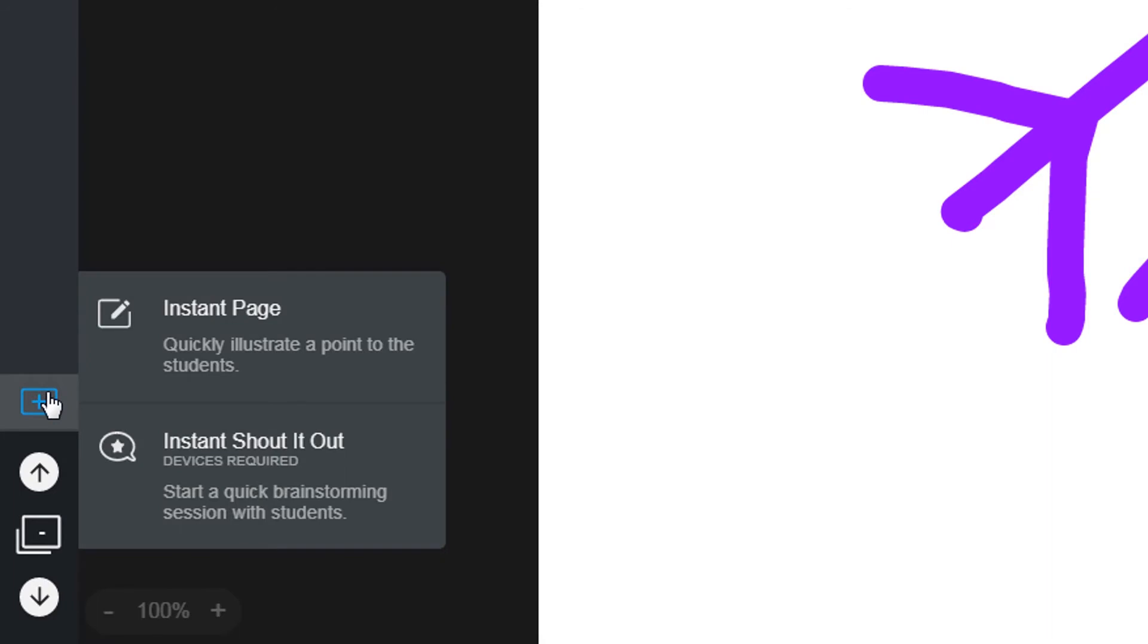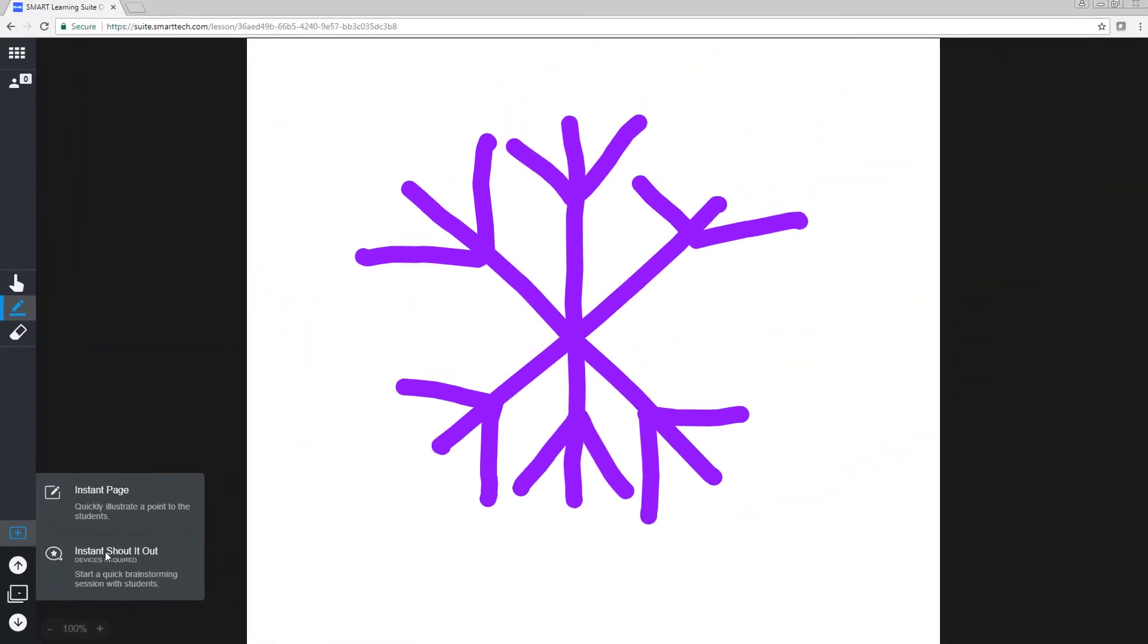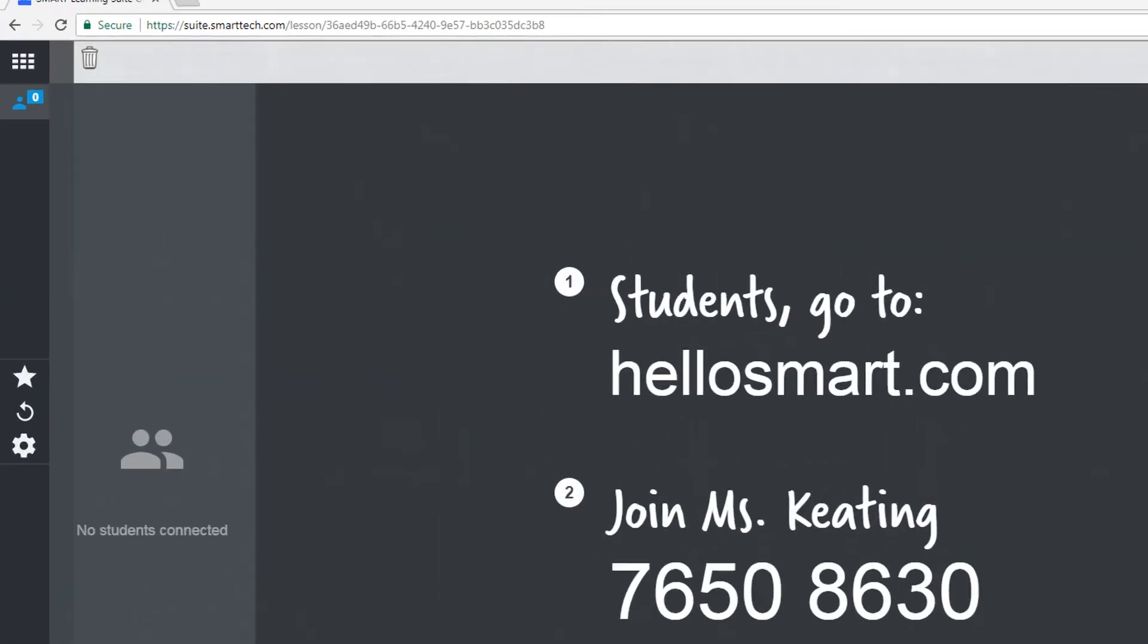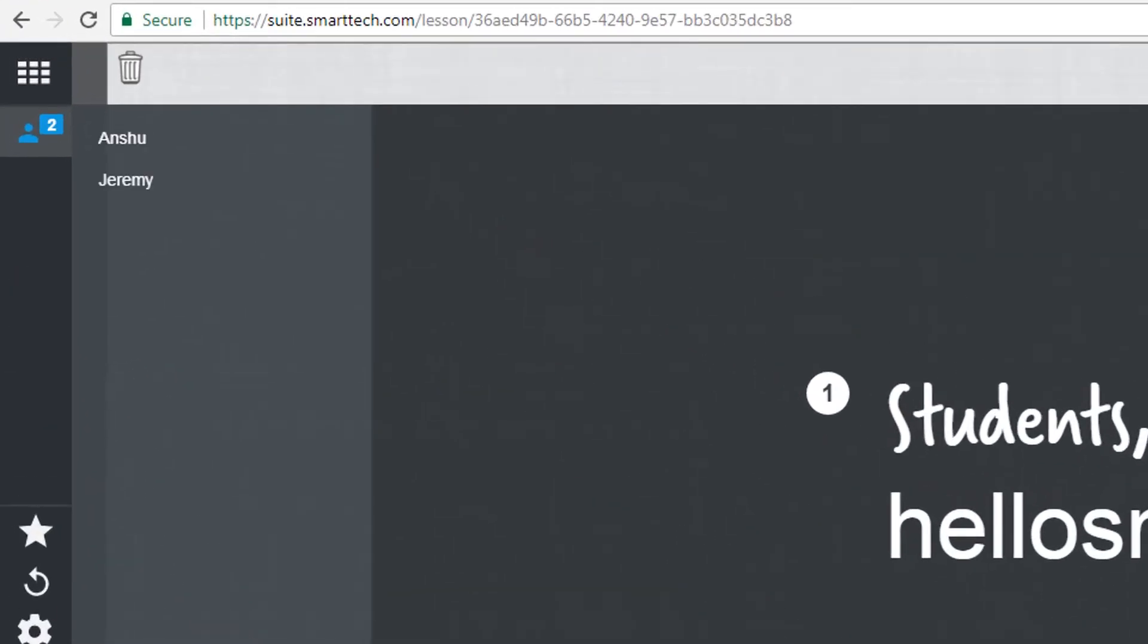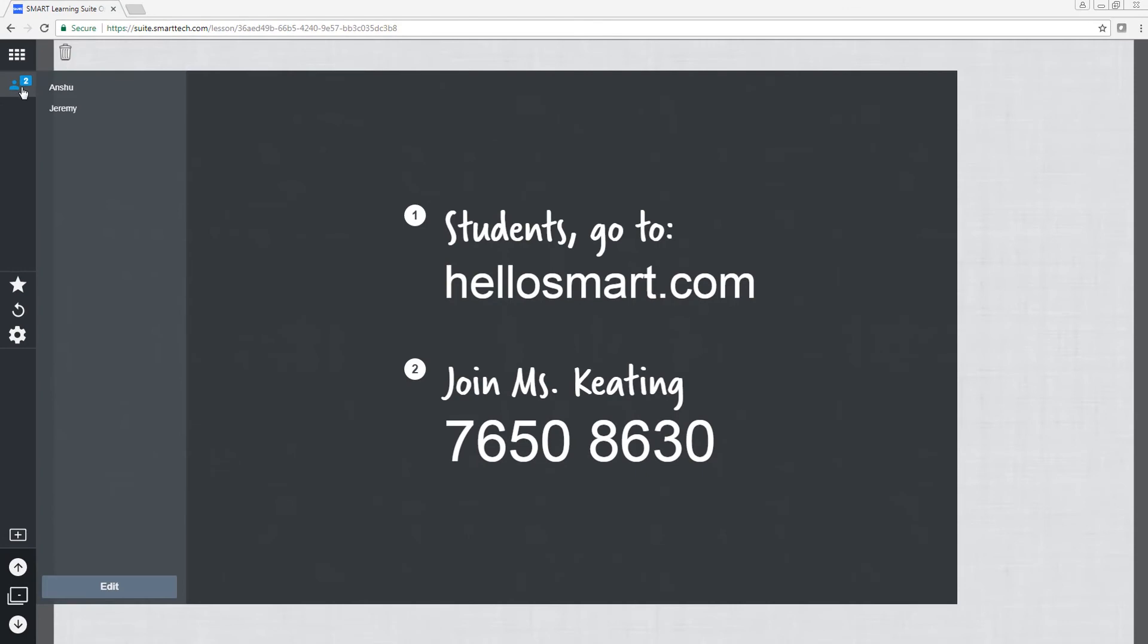If you want to start a class discussion or gather ideas, you can launch a brainstorming session on the spot. You might ask students to guess which factors can influence the way snowflakes form. After students have signed in through the class lobby, they can add to the brainstorming page by submitting responses from their devices.